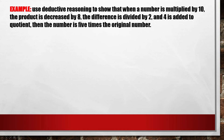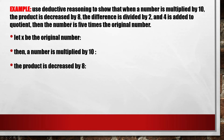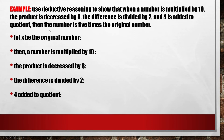For example, use deductive reasoning to show that when a number is multiplied by 10, the product is decreased by 8, the difference is divided by 2, and 4 is added to the quotient — then the result is 5 times the original number. Let x be the original number. A number multiplied by 10 gives 10x. The product decreased by 8 gives 10x minus 8. The difference divided by 2 gives 5x minus 4. Adding 4 to the quotient gives 5x.